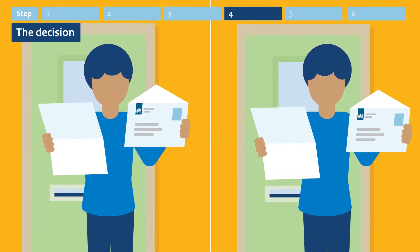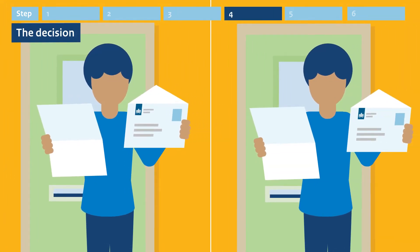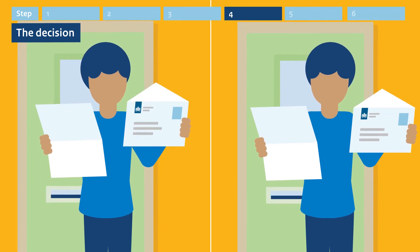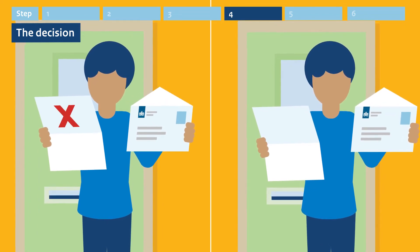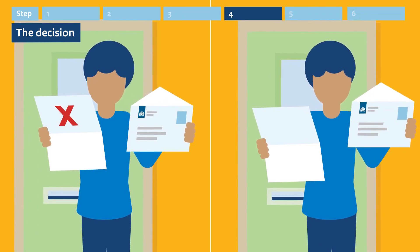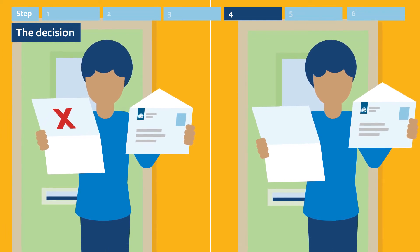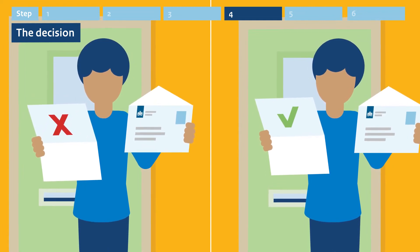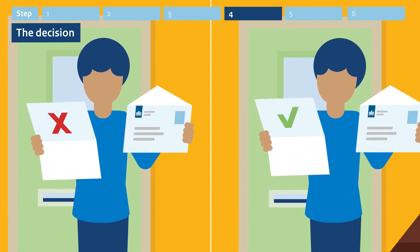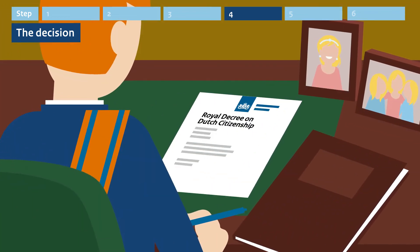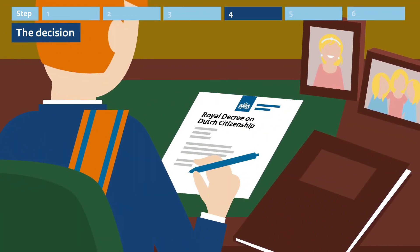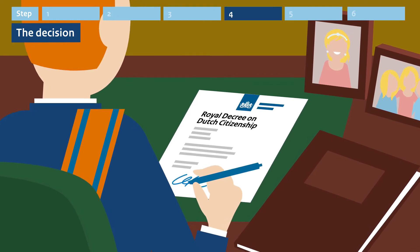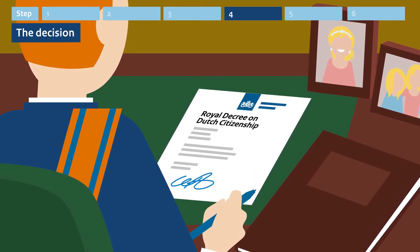Step 4. The decision. The IND has taken a decision. Has your application been rejected and you don't agree? Then you can apply for review. Has your application been approved? Then the IND asks the King to give you Dutch nationality. The King must provide his signature. You don't immediately become Dutch.